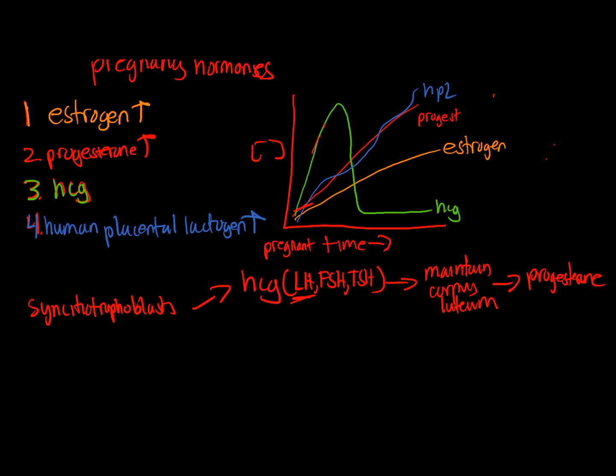And the HCG, eventually the placenta, by 8 to 10 weeks, will make enough progesterone on its own. And so your corpus luteum will die off. And as you can see here, your HCG also decreases. And I'll also note that HCG is detectable in urine. So this is what we're looking at during the urine test to tell you whether you're pregnant or not.